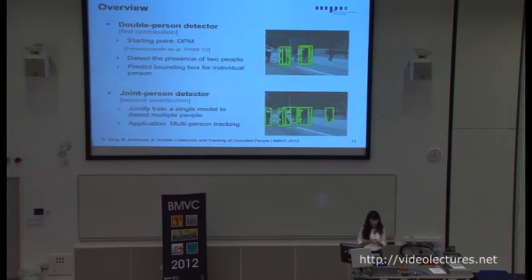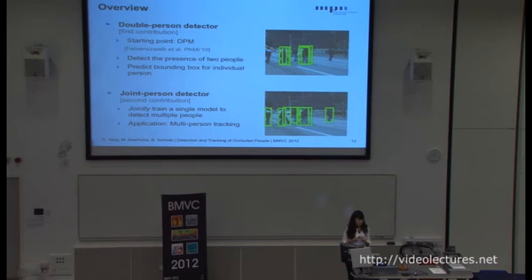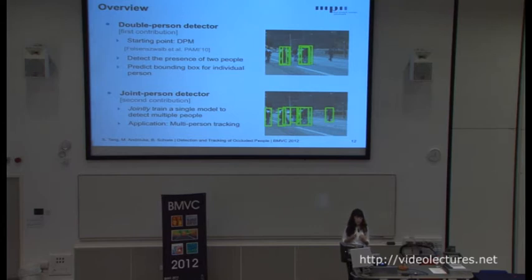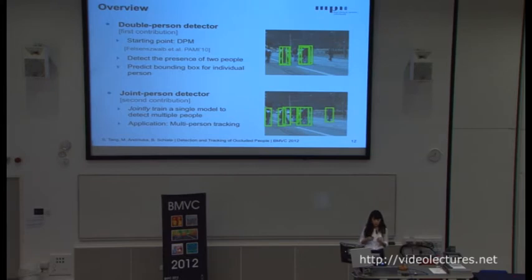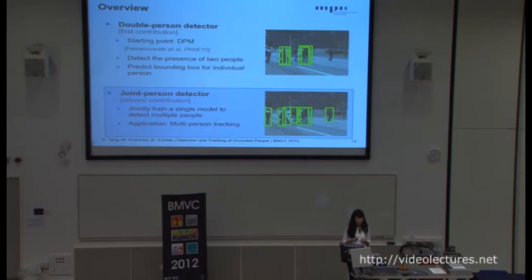Until now, I have shown that the double-person detector outperforms the single person detector by a large margin on our two-people dataset. While this dataset is ideal for quantizing the performance of detection of occluded people, it is rather idealistic. In the crowded street scenes, we have single persons who are fully visible, and also two or more people who occlude each other. So for the second iteration, we propose a joint person detector, which is a jointly trained single model to detect all the persons in the scenes.